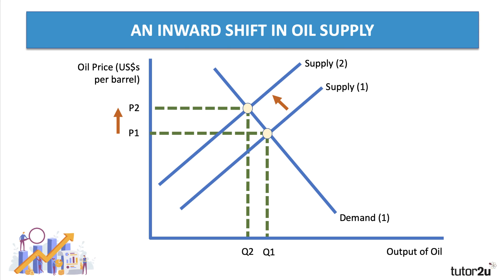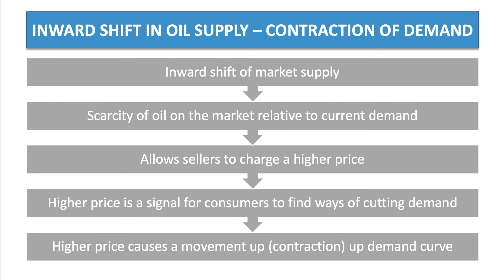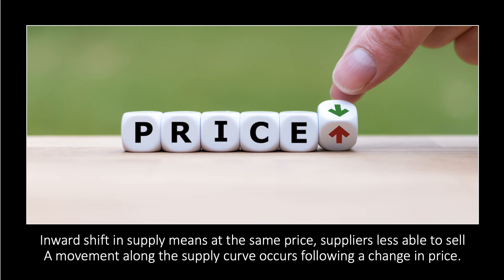The market price increases to P2. The quantity traded will contract at higher prices. It's costly to keep consuming the same amount of oil at a higher price. So a change in the price causes a movement along the demand curve, this time caused by an inward shift of supply. Of course, it could go the other way — the supply could shift outwards, resulting in either a contraction or an expansion of demand. With an inward shift of supply, there's a scarcity of oil on the market relative to current demand, and that allows sellers to charge a higher price per barrel. The higher price is a signal for consumers to find ways of cutting their demand, causing a movement — a contraction — up the demand curve. So an inward shift of supply means that at the same price, suppliers are less willing and able to sell.